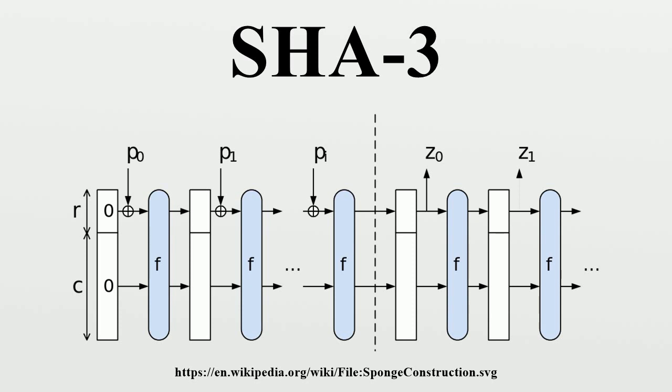To ensure the message can be evenly divided into r-bit blocks, padding is required. Keccak uses the pattern 10*1: a 1 bit, zero or more 0 bits, and a final 1 bit. The final 1 bit is required for the security proof to work for sponges of different rates, that is, different hash variants. Without it, different hash variants of the same short message would be the same up to truncation.